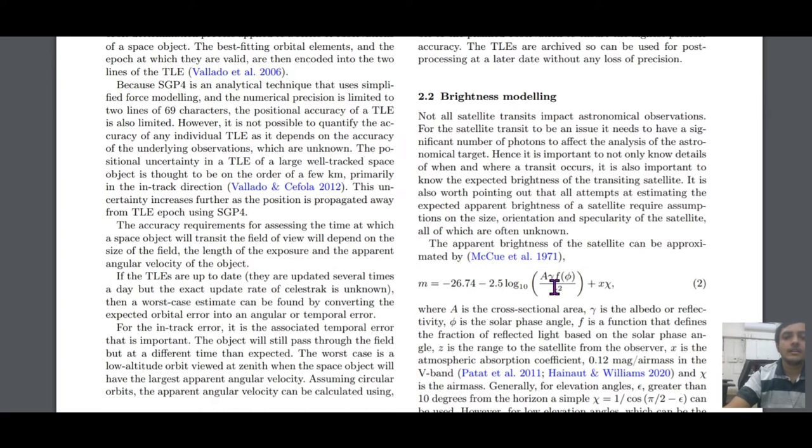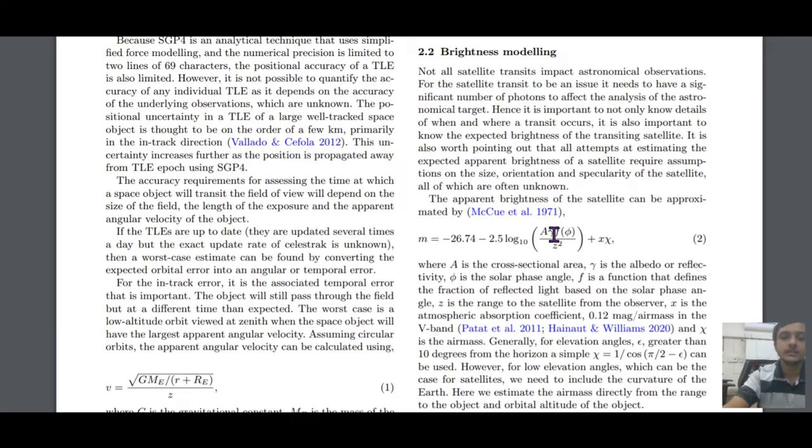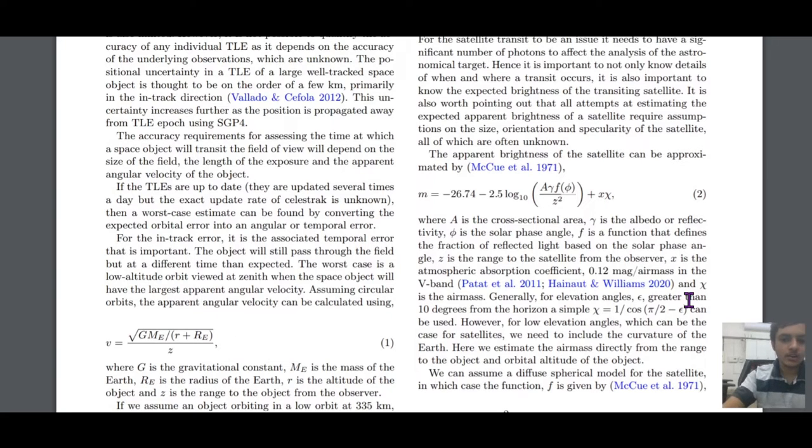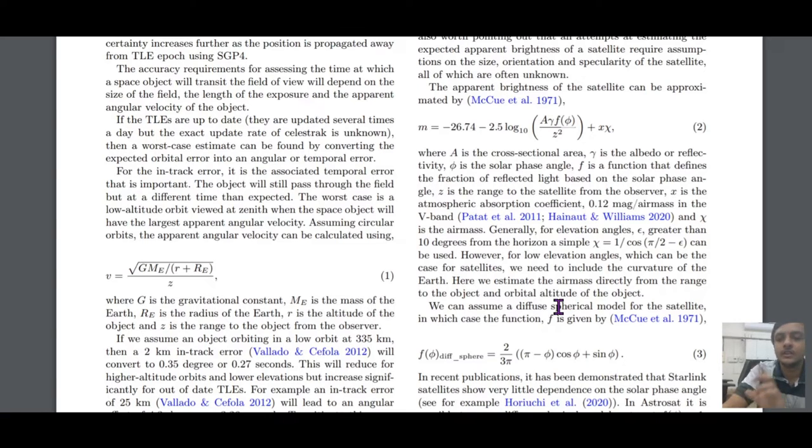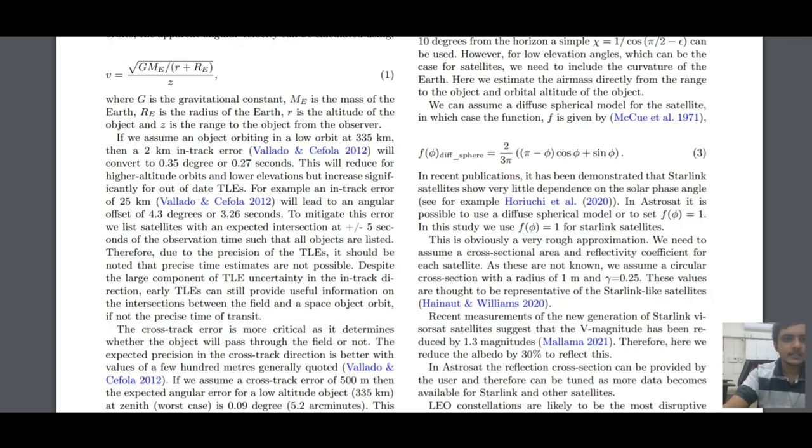What this code tries to do is it tries to model all the kinds of satellite transits. So, satellites can be of various sizes and viewed at various intensities. Not all the transits will be impacting the astronomical observation. So, there is an equation that they are using which shows the apparent brightness. It's a fine-tuned equation. If you see, M is equal to minus 26.4 minus 2.5 log a gamma f phi by z square plus x phi. This is a lot of parameters. So a is cross-section, gamma is albedo, phi is solar phase angle, f is function that defines the fraction reflected. All these things are there. There is also diffuse spherical model for the satellite that they are modeled. All these things are accounted for in this code.